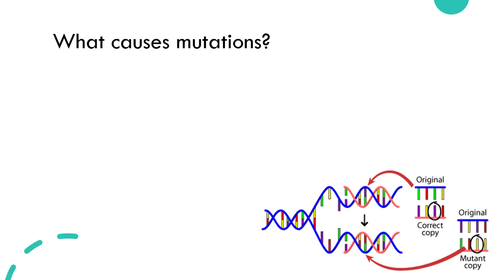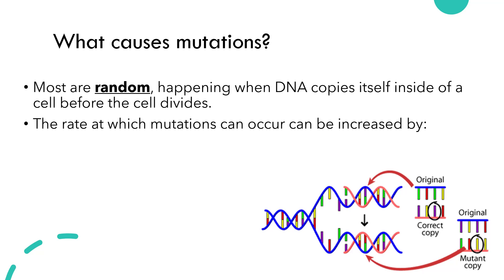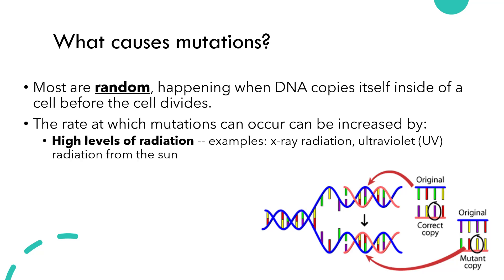You might be wondering what could cause these changes in DNA to happen. What causes mutations? Most are random, and there's no clear or obvious cause. Most mutations occur as a random error when the DNA copies itself inside of a cell before that cell divides. However, there are some things around us that can cause an increase in the likelihood that mutations will occur, such as high levels of radiation. For example, high doses of x-ray radiation could cause mutations, or lots of ultraviolet or UV radiation from the sun, which can cause mutations in skin cells and lead to skin cancer.